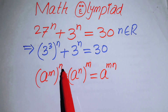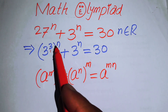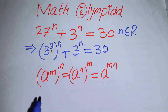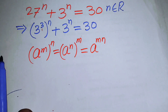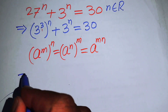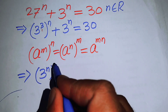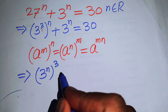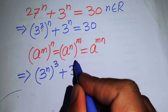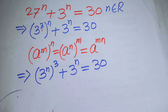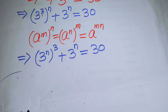It means that if you interchange these two exponents, it does not affect the final answer. So we will interchange these exponents and write the output in the form of 3 to the power of n, its whole cubed, plus 3 to the power of n is equal to 30.